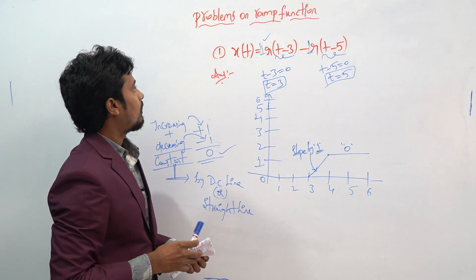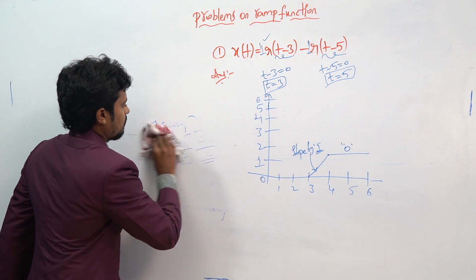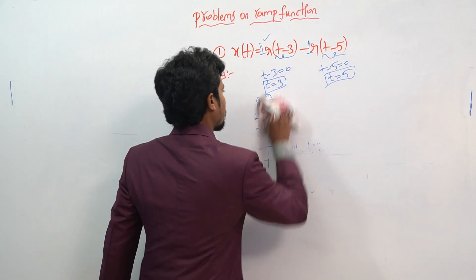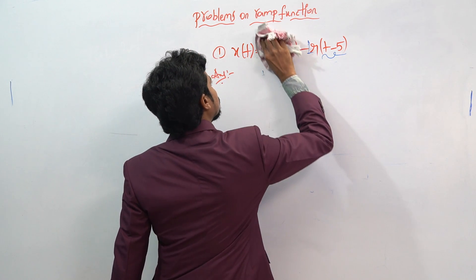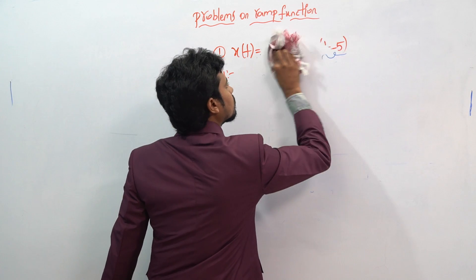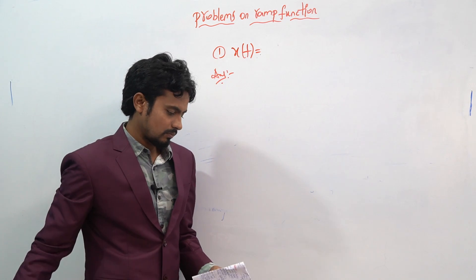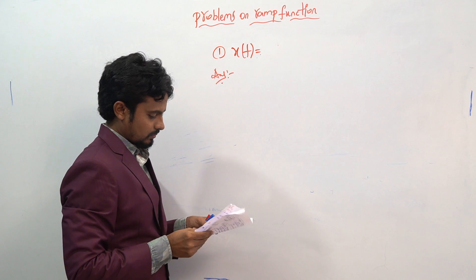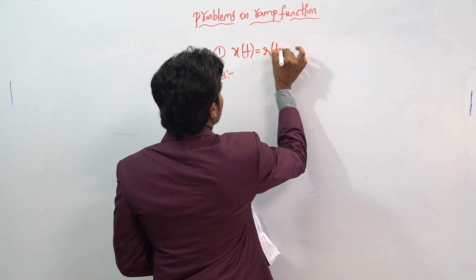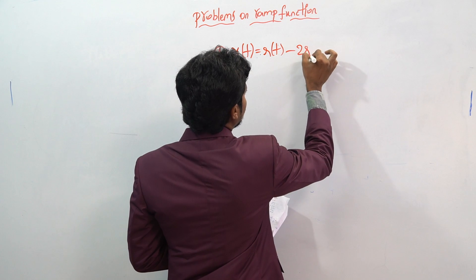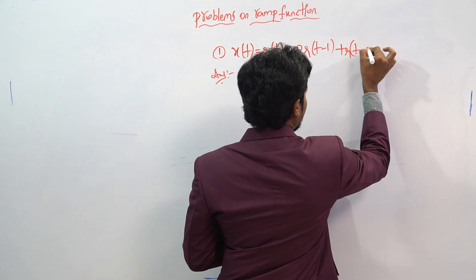The slope becomes 0. That was the plot. Next, let's see a final question: r(t) minus 2 into r(t-1) plus r(t-2).